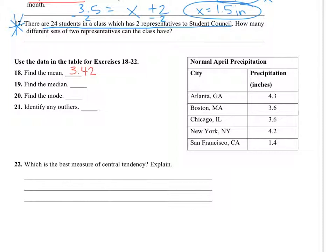The median is when you line up the numbers from least to greatest. So first, I'm going to line up the numbers. So 1.4, 3.6, 3.6, 4.2, and 4.3. So the middle number, 1, 2, 3, 4, 5, is the fifth number, which is 3.6.